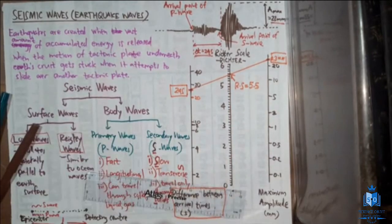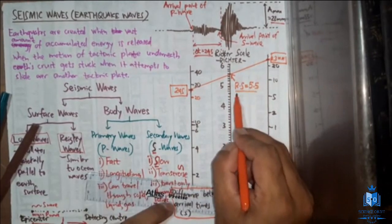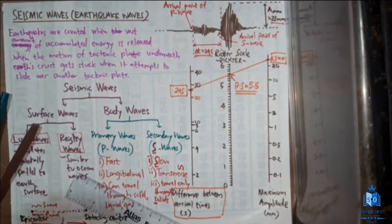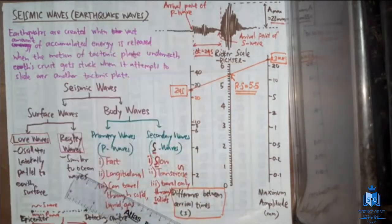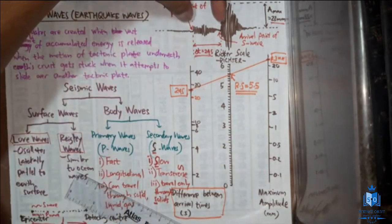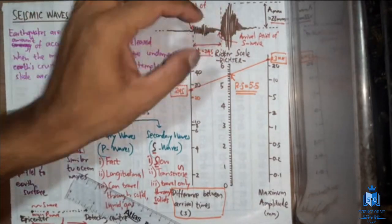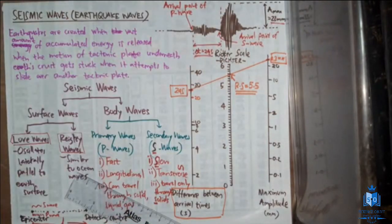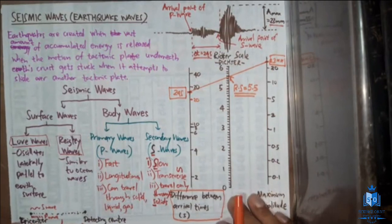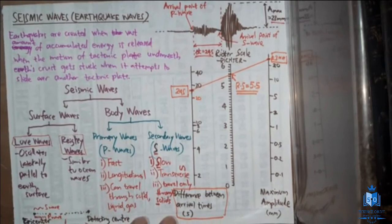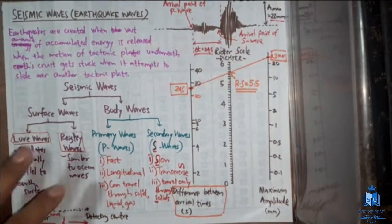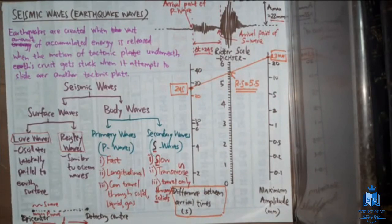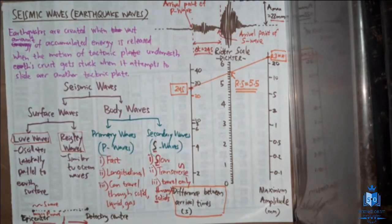The Richter scale is the measure of the severity of an earthquake — a higher value means greater severity. The two pieces of information needed are: the difference in arrival times between P waves and S waves, and the maximum amplitude recorded for the S wave, both obtained from the seismograph at the detecting center. This summary covers everything you need to know about seismic waves for your exam.